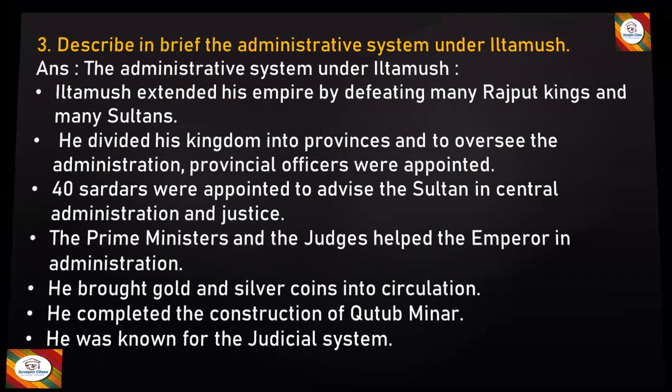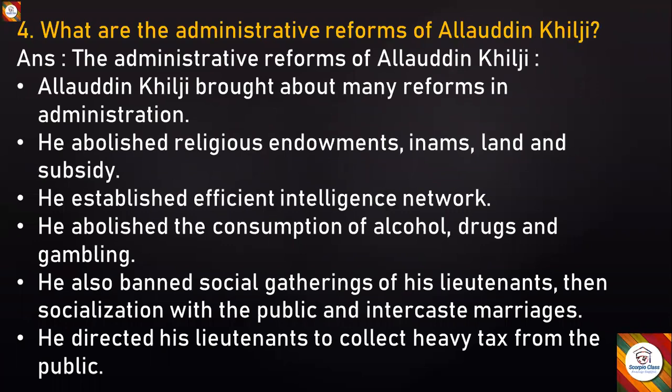Next question: What are the administrative reforms of Alauddin Khilji? Answer: Alauddin Khilji brought about many reforms in administration. He abolished religious endowments in arms, land, and subsidy. He established an efficient intelligence network. He abolished the consumption of alcohol, drugs, and gambling. He also banned social gatherings of his lieutenants, their socialisation with the public, and inter-caste marriages. He directed his lieutenants to collect heavy tax from the public.